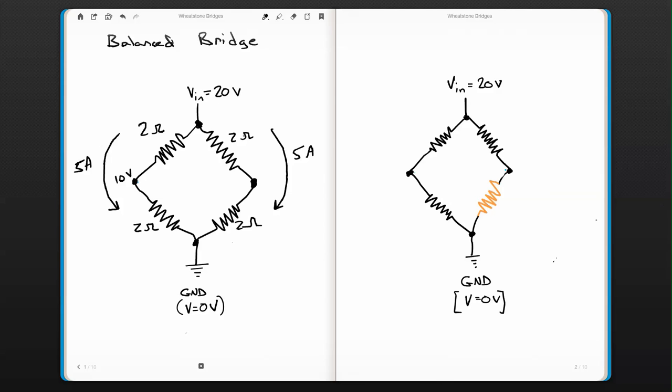How about the other side? A two ohm resistor, two ohm resistor, and five amps flowing through. That means there's going to be a 10 volt drop and then another 10 volt drop. So it goes all the way down to zero on this side as well. So this is a balanced bridge.